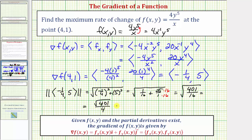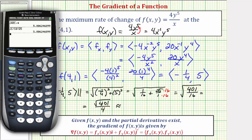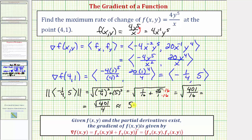For the decimal approximation, we compute √401 / 4, or equivalently √(1/16 + 25), and get the same result. To four decimal places, the maximum rate of change of f at the point (4,1) is approximately 5.0062.